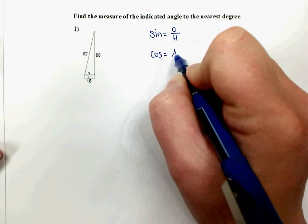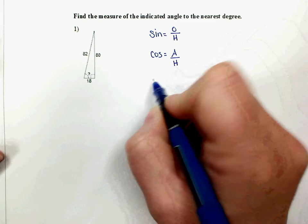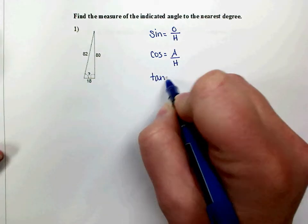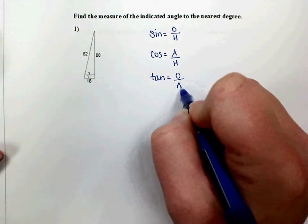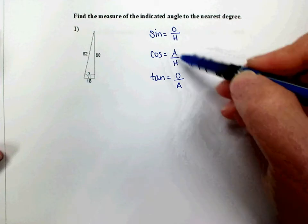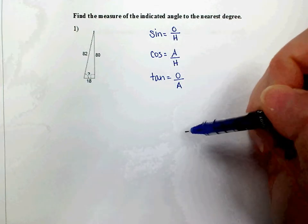cosine, which is the adjacent over the hypotenuse, or tangent, which is the opposite over the adjacent. SOH-CAH-TOA is the way that we remember those.